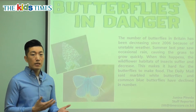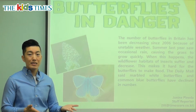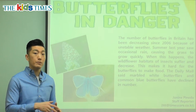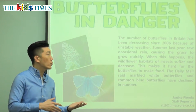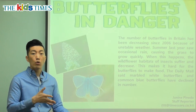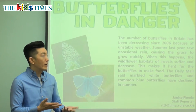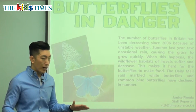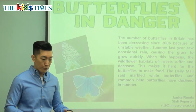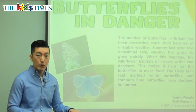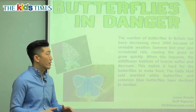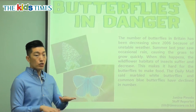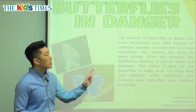Unstable means that it's not normal. It keeps going up, it keeps going down, it's all over the place. It's wobbly — that's unstable. If I'm standing on ground and it's not stable, then I might fall. So that's unstable weather — the weather keeps going up and down.